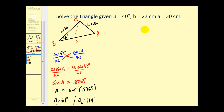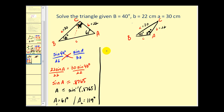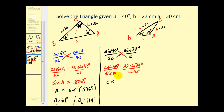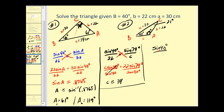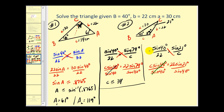For the first solution: angle A = 61°, angle C = 180 − 61 − 40 = 79°. Using the law of sines: sine 40° / 22 = sine 79° / C, giving side C ≈ 34 centimeters. For the second solution: angle A = 119°, angle C = 180 − 119 − 40 = 21°. Using the law of sines: sine 40° / 22 = sine 21° / C, giving side C ≈ 12 centimeters.